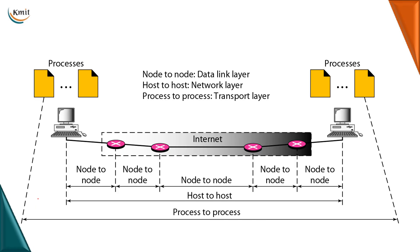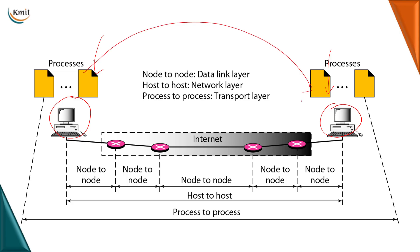Look at this picture — we have the source machine and the destination machine where there are several processes running on the source machine and several processes on the destination machine. A process on the source host wants to communicate with a process on the destination host, then the transport layer delivers the packet from the process on the source machine to the process on the destination machine. Whereas the network layer is responsible for host-to-host communication and the data link layer is responsible for node-to-node communication.